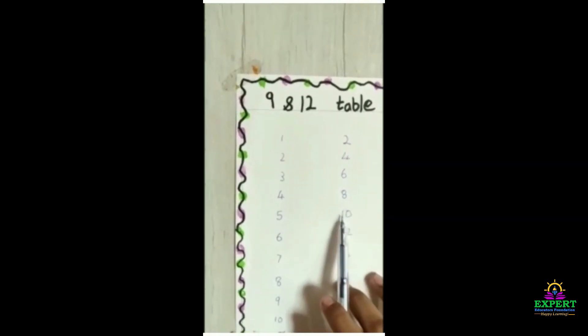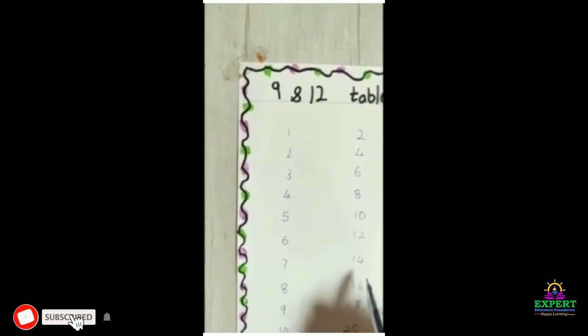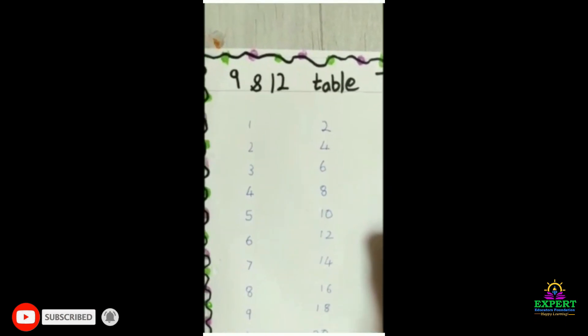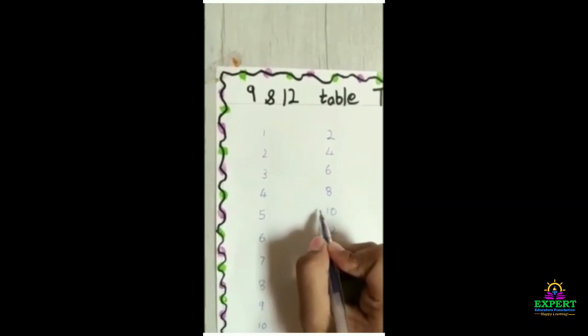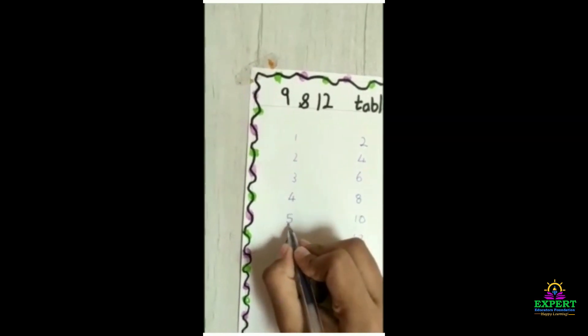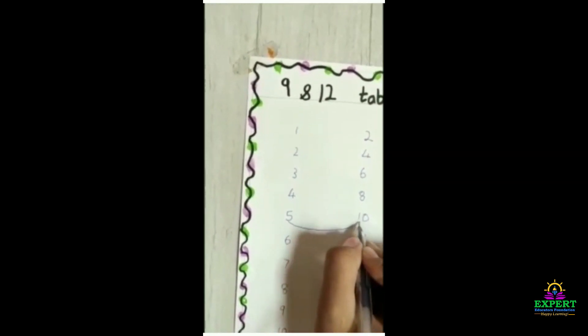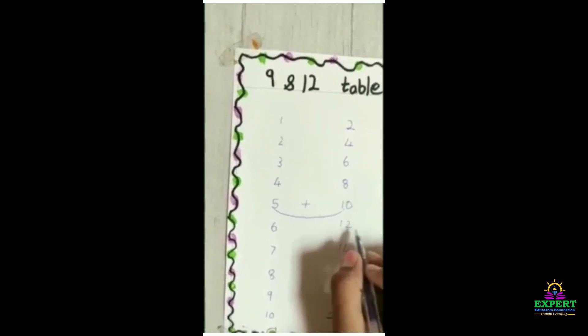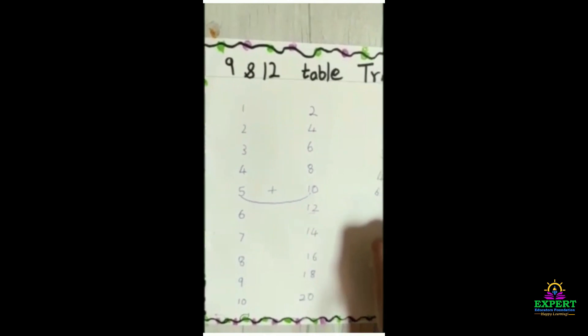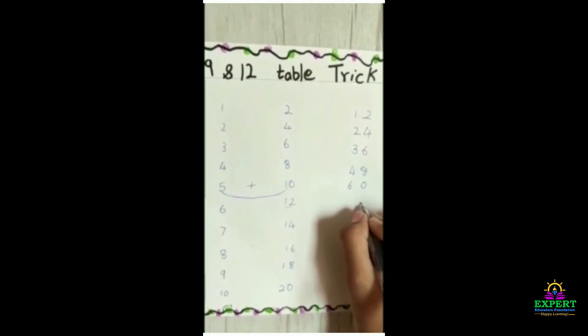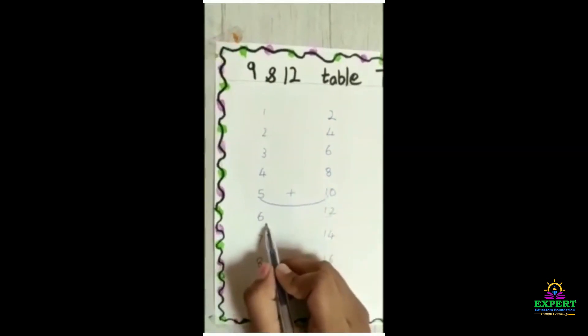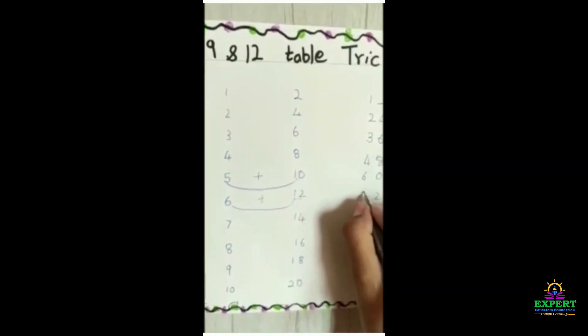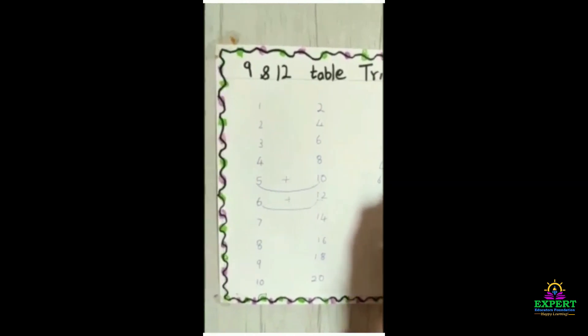Now there are 2 digit numbers. The last digit is 0, so we write 0 over here. 5 plus 1 is 60. Last digit is 2, we write 2 here. And 6 plus 1 is 7. The answer is 72.